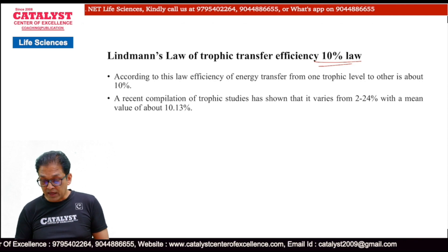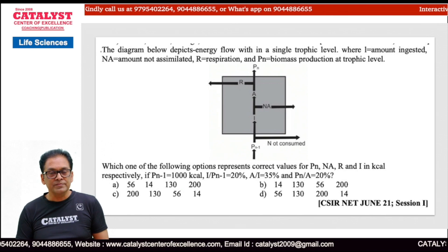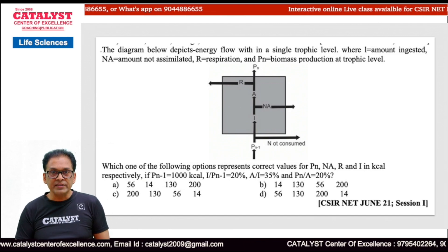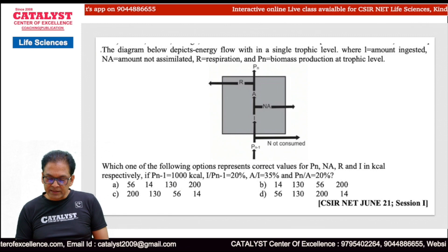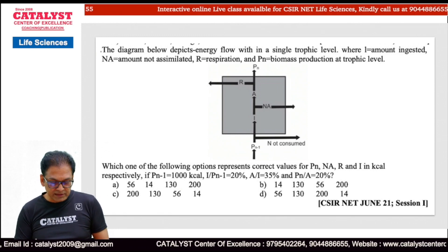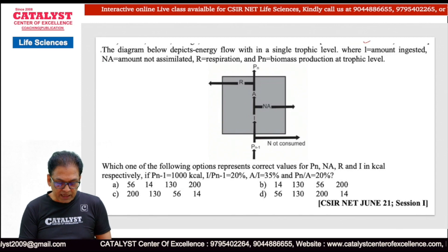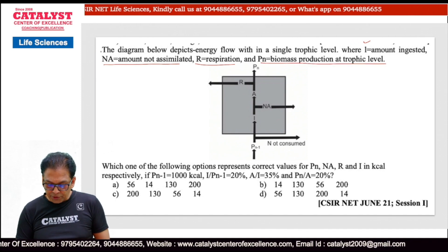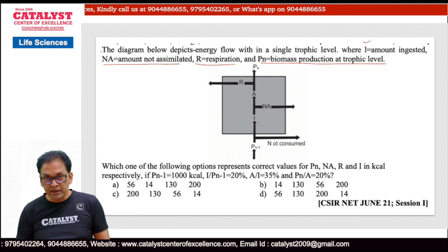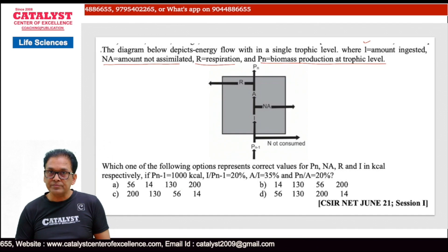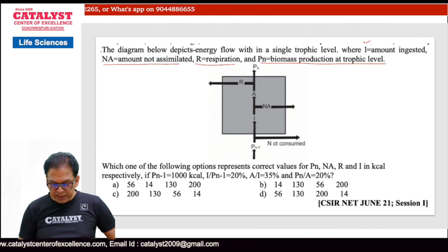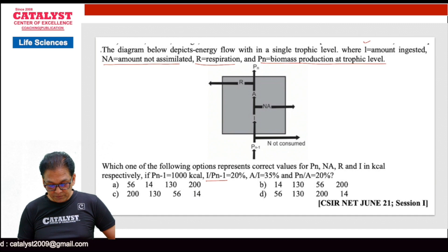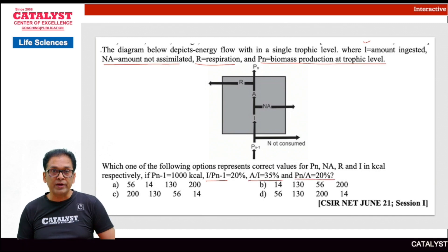Now let us try to solve the question asked in the CSIR NET last examination. The diagram depicts energy flow within a single trophic level, where I stands for amount ingested, NA for amount not assimilated, R for respiration, and PN for biomass production at that trophic level. What is given: Pn-1 is 1000 kilocalories; IN upon Pn-1, which is consumption efficiency, is 20%; A upon I, which is assimilation efficiency, is 35%; and PN upon A, which is production efficiency, is 20%.